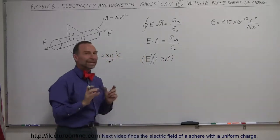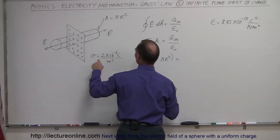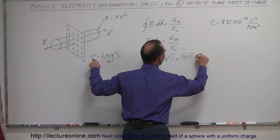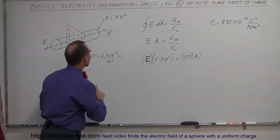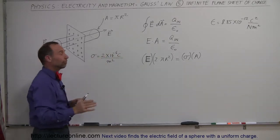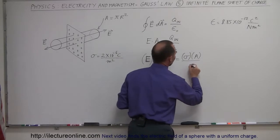So 2 times the area of each end of the Gaussian surface. And that will equal the q inside. The q inside will equal the charge density times the area. Remember, the charge density is charge per unit area. If we then multiply times the area, the area units fall away and you're just left with the charge. And we divide that by epsilon sub nought.